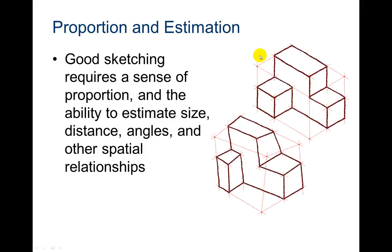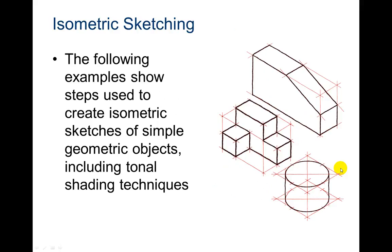For this class you're going to be using isometric grid paper and that helps a lot with making sure your object doesn't end up looking like that. So the following examples that I'm going to be showing you are steps used to create isometric sketches of simple geometric objects including tonal shading techniques. The first one is this object because it is a little bit easier.